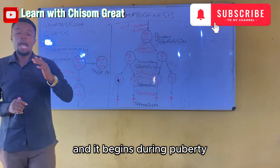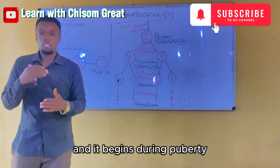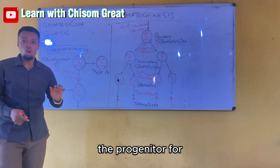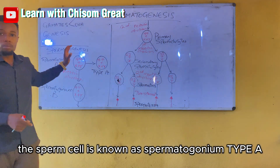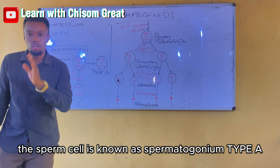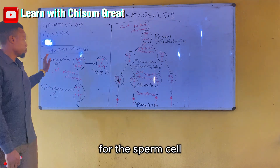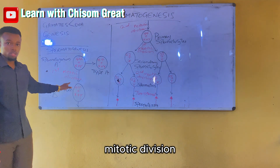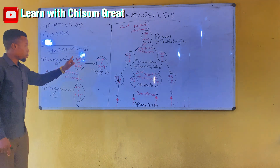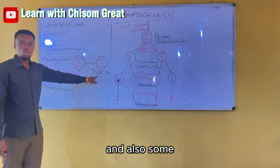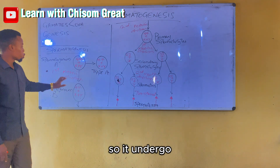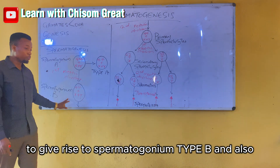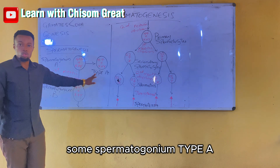Spermatogenesis begins during puberty, at the age of 11 to 16. The progenitor for the sperm cell is known as spermatogonium type A. Spermatogonium type A undergoes a mitotic division to give rise to spermatogonium type B, and also spermatogonium type A. The spermatogonium type A undergoes a second mitotic division to again give rise to spermatogonium type B and spermatogonium type A.